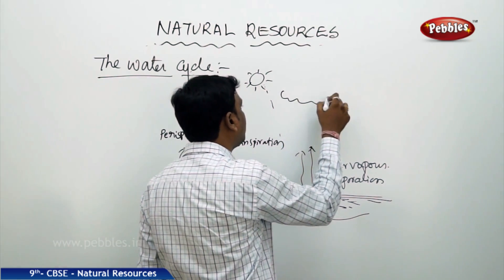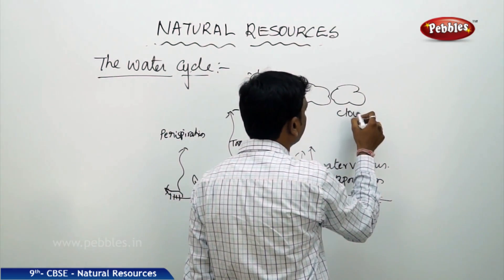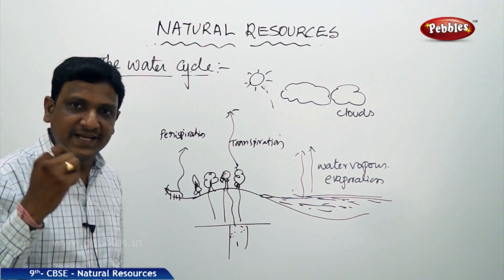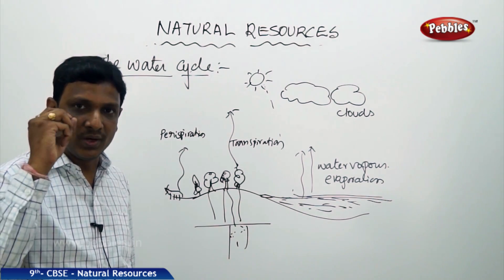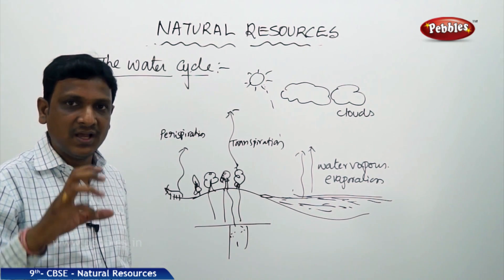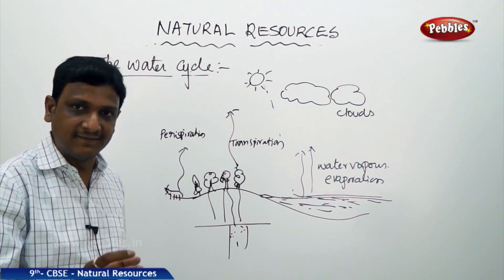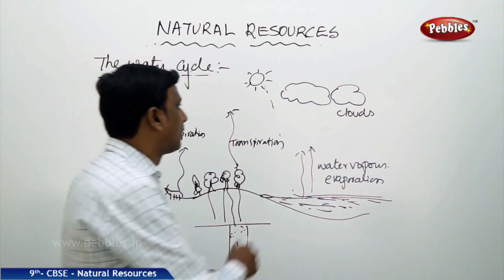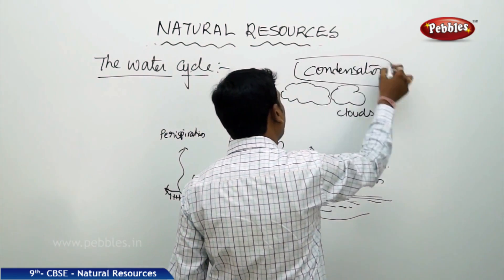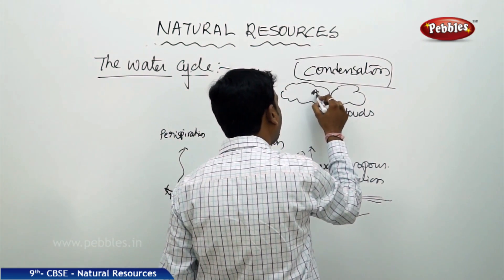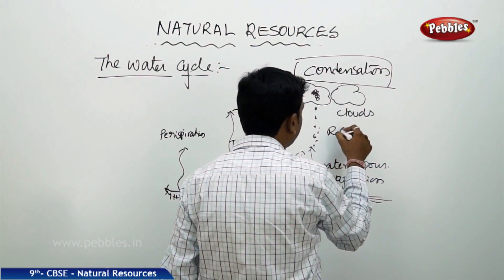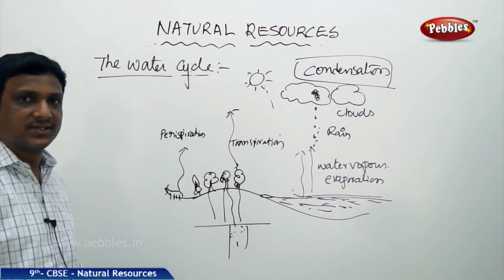This water vapour is collected and forms the clouds. The tiny droplets of water vapour take one particle as a nucleus — like a dust particle — and aggregate around it. When they grow in size and the size is big enough, condensation takes place. Due to condensation they grow in size, become heavy as rain drops, and the rain drops fall down as rain. So this cycle is called the water cycle.